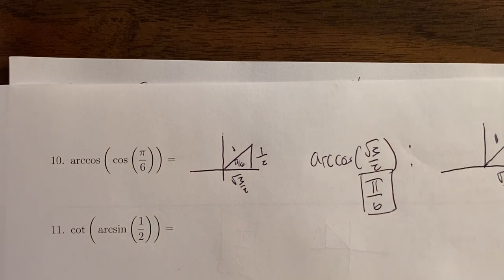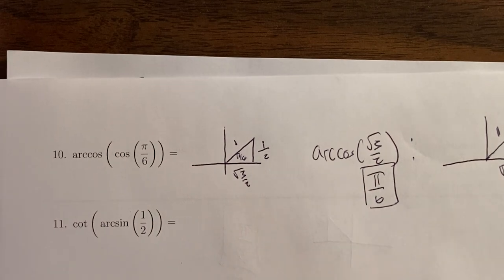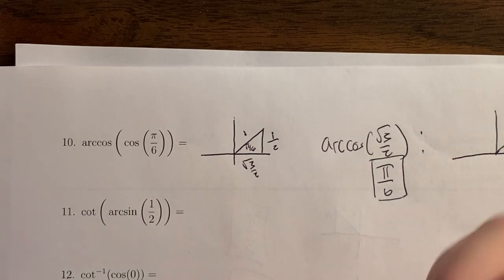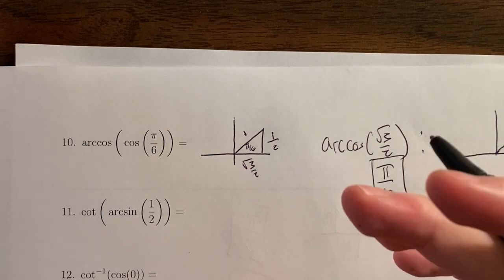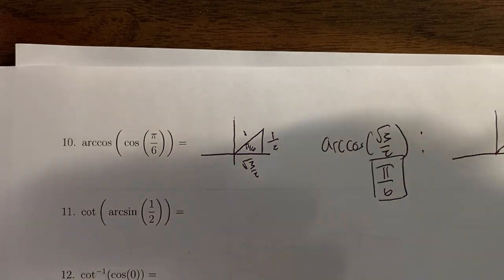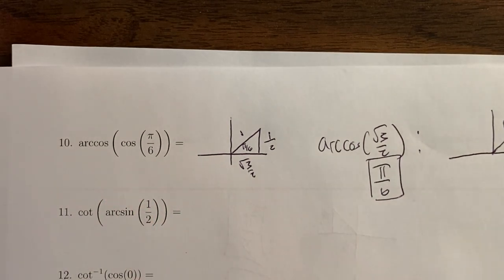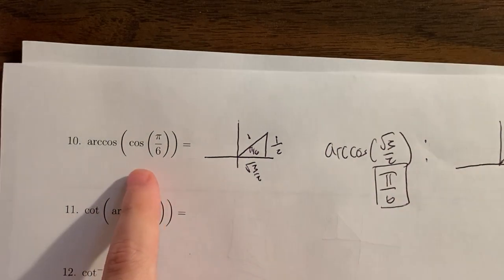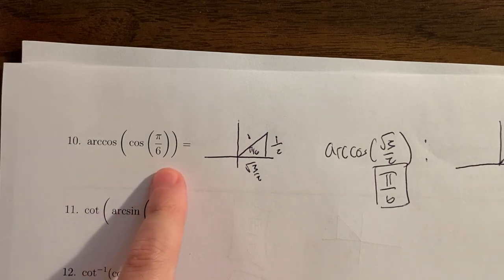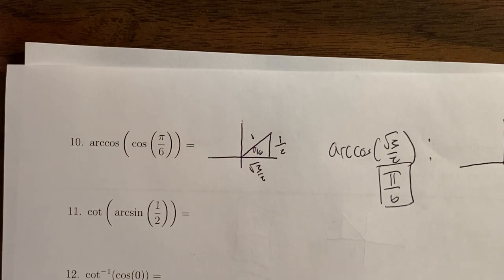Unfortunately, it's not always going to be that easy because of how the functions are defined. It only works if the angles are in certain quadrants. It would be nice if every time you squared something and then took the square root, you got the same thing back — like 5 squared is 25, square root gives 5. But negative 5 squared is also 25, and the square root gives 5, not negative 5. So it won't always be straightforward.